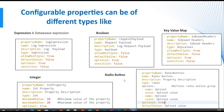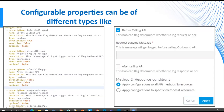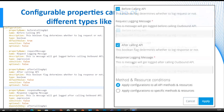In the YAML file, we can have different kinds of properties: it can be an expression property, a boolean property which will be a checkbox, a key-value property just like a map, a radio button where you can select one out of multiple, or an integer. You can also have a property which depends on another property. For example, the 'response message' property depends on a key called 'after calling API'. That is a boolean property with default value false — if it's not selected, the response message property won't get rendered. Once you select the checkbox, that dependent property will get rendered.